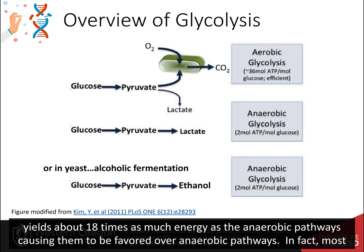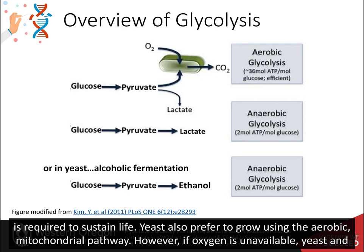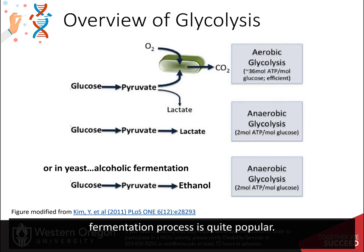Most animal tissues can only survive short anaerobic bursts that occur in isolation and don't involve the entire organism. The aerobic pathway is required to sustain life. Yeast also prefer to grow using the aerobic mitochondrial pathway. However, if oxygen is unavailable, yeast and other fungi can switch to anaerobic growth and produce ethanol as a byproduct. The production of alcoholic beverages through this fermentation process is quite popular.